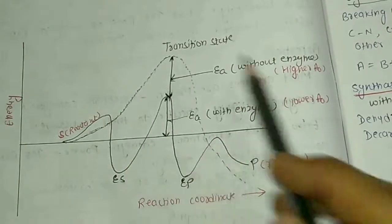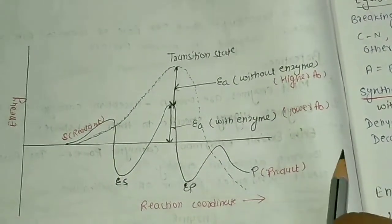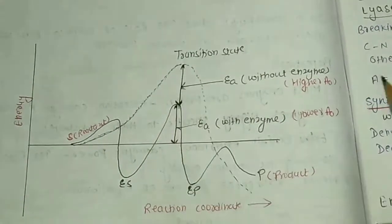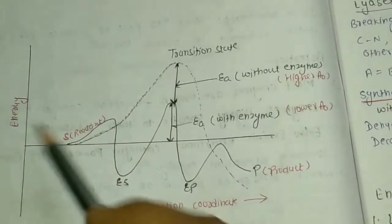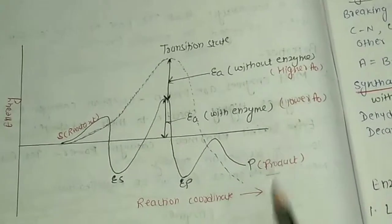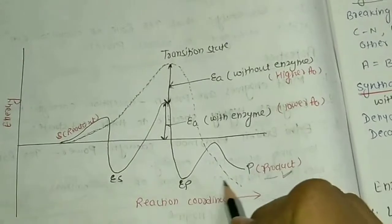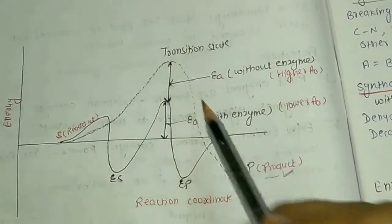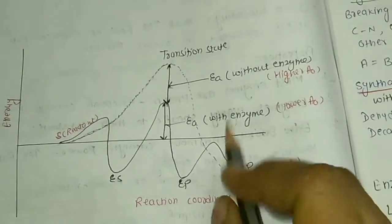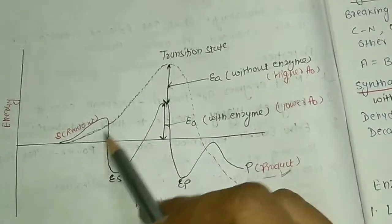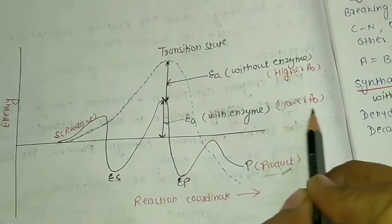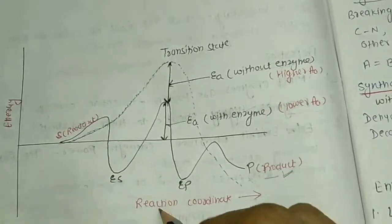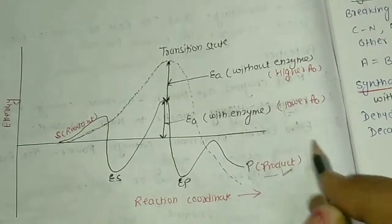Now let's talk about how transition energy decreases and rate of reactions increases. This graph shows high activation energy. The dark line shows the reaction with enzymes and the dotted line shows without enzymes. Without enzymes, reactions are very slow and have high activation energy. By lowering the activation energy, enzymes increase product formation. This graph shows that enzymes decrease activation energy, increasing the rate of reactions.